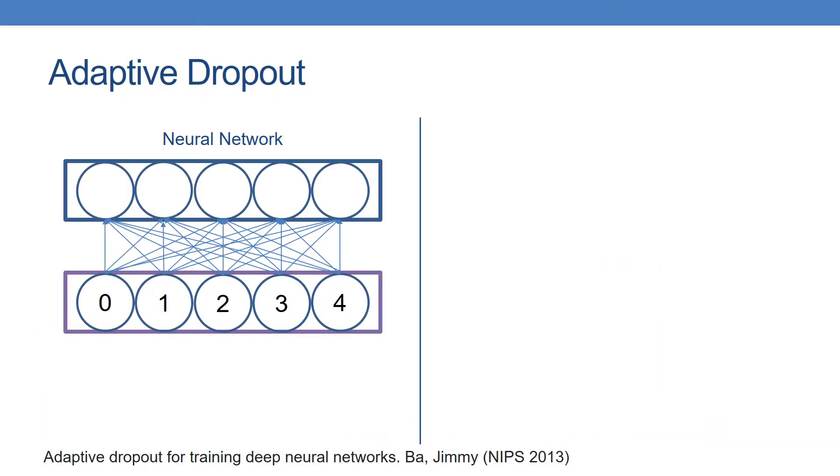Our approach to reduce the amount of computation necessary for neural networks draws inspiration from adaptive dropout. Here is a simple example illustrating the technique.